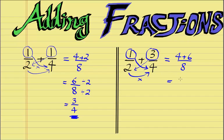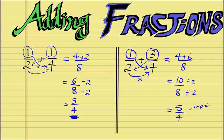We add the 4 and the 6 to get our numerator, which is 10. So 10/8. We can simplify this further, so we divide the 10 by 2 and divide the 8 by 2. So 10 divided by 2 is 5 and 8 divided by 2 is 4. In this case what we have is an improper fraction, so we need to write this in mixed number form. We divide the top number 5 by 4, which is 1 with remainder 1. We put that over the division line and keep our original denominator 4. So 1 and 1/4 is our final answer.